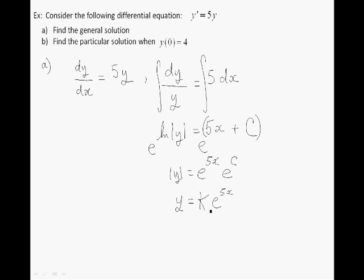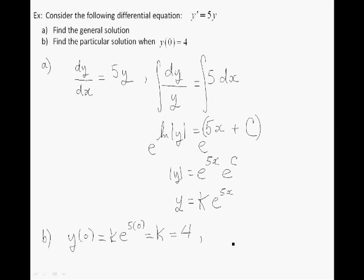Now let's find the particular solution using the given condition y of 0 equals 4. We plug in x equals 0: since 5 times 0 is 0 and e to the power of 0 is 1, we get y of 0 equals k. Setting this equal to 4 gives k equals 4. So our particular solution is y equals 4 e to the power of 5x.